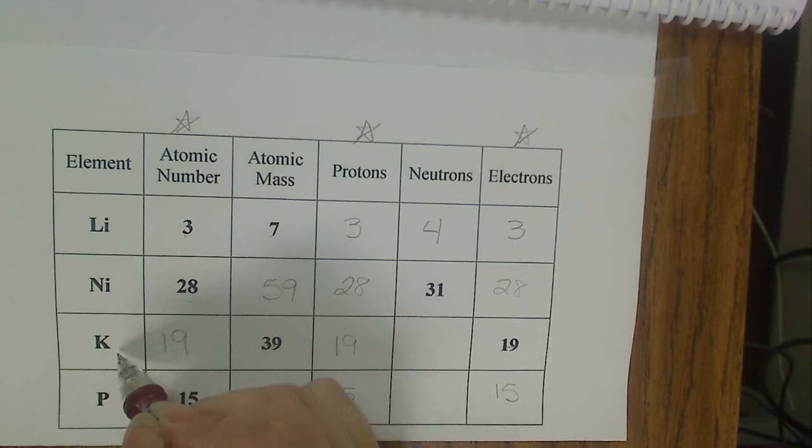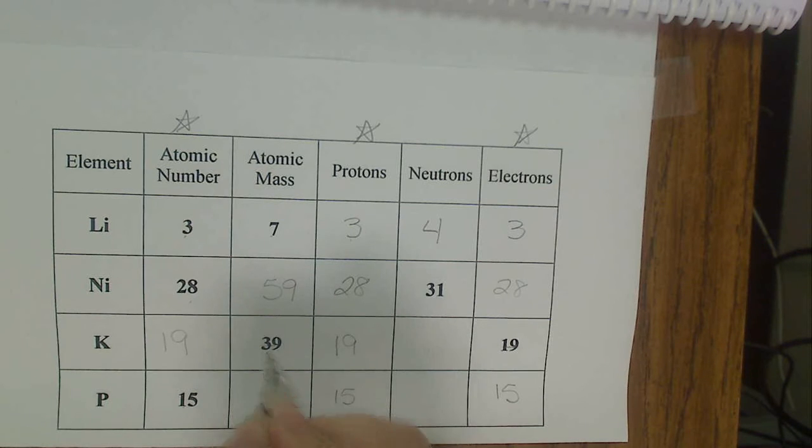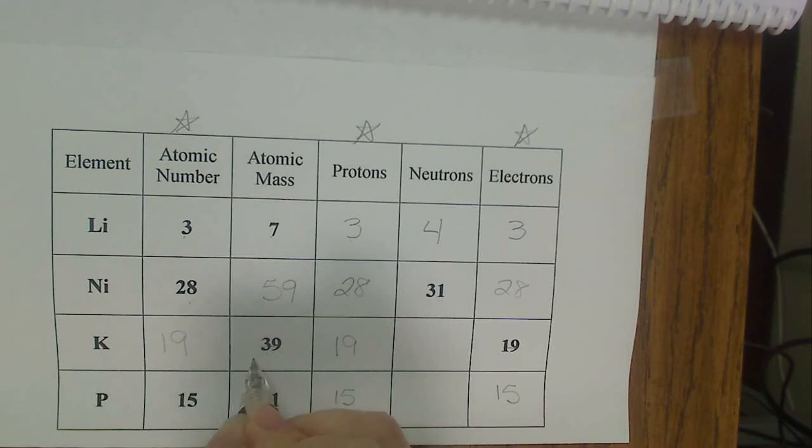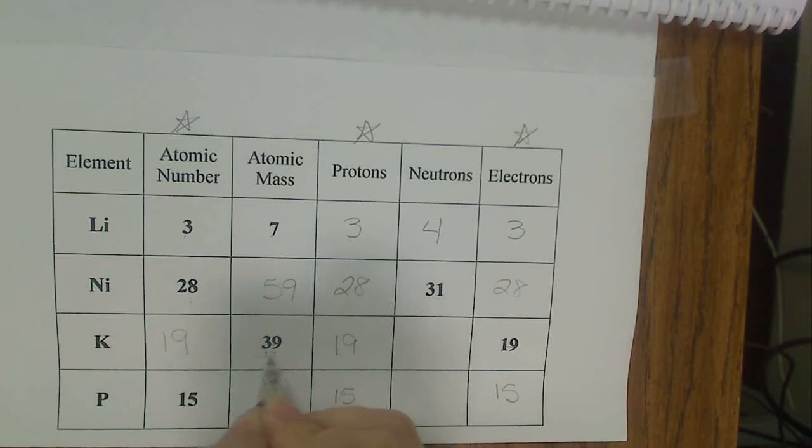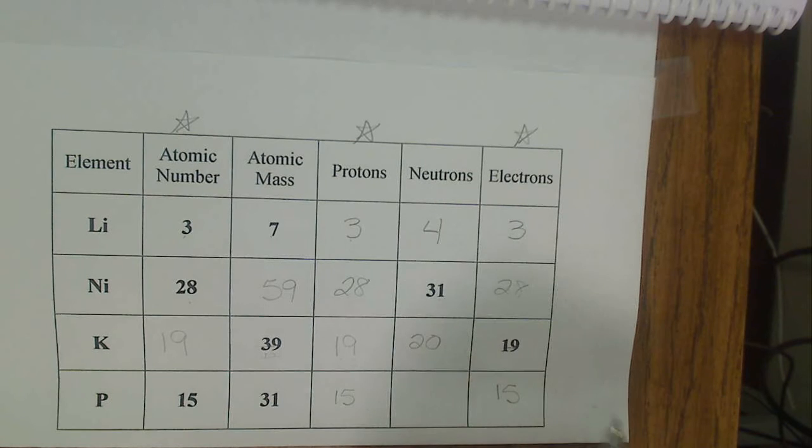For potassium, I need my neutrons. I have 39 for my atomic mass, and I have 19 protons. So I'm going to subtract 19 from 39, and I get 20 neutrons.